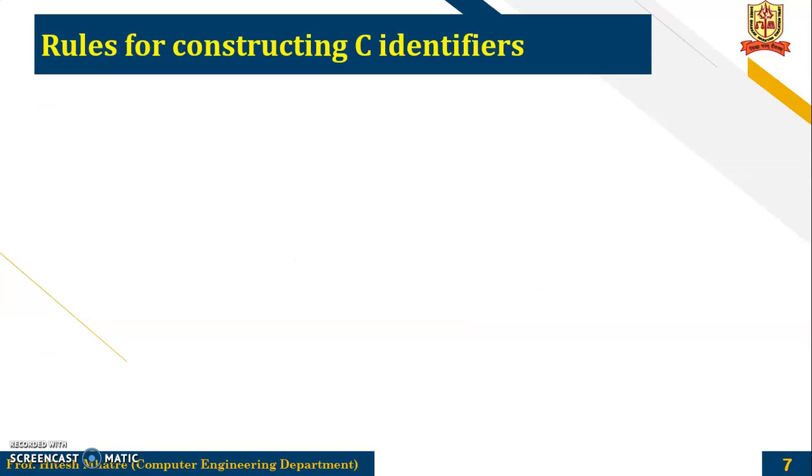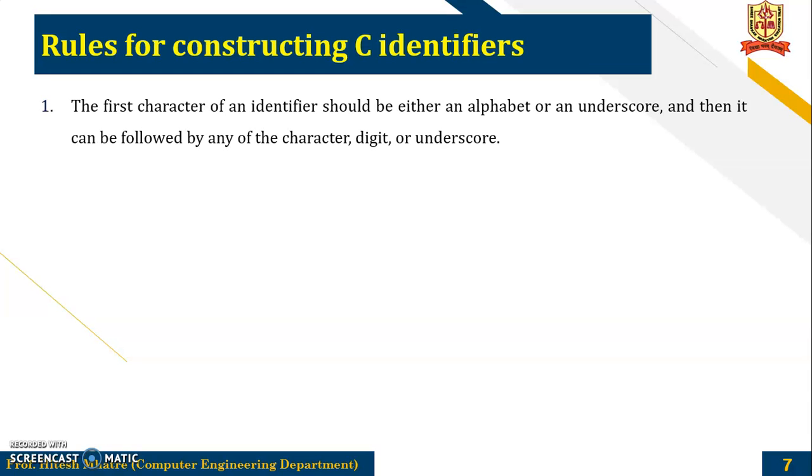Now there are certain rules while constructing these identifiers. First, the first character of the identifier should either be an alphabet or an underscore and then it can be followed by any character or digit or underscore. It should not begin with any numerical digit.